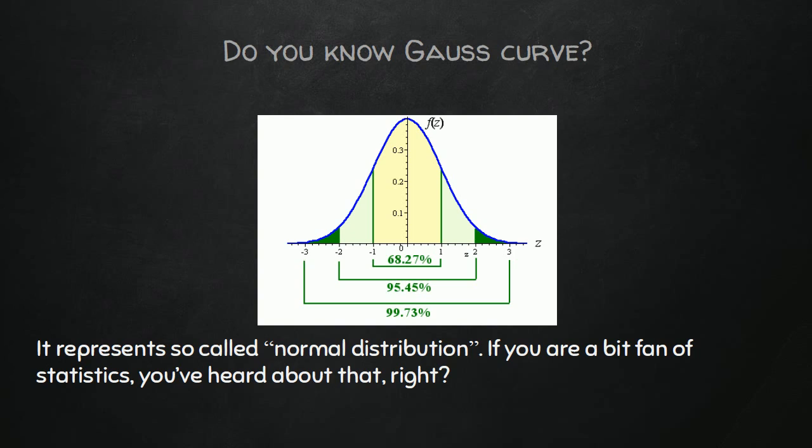When you generate new numbers on online roulette, you are actually looking for certain areas. You can search the term if you don't know what the Gauss curve is and how it works.